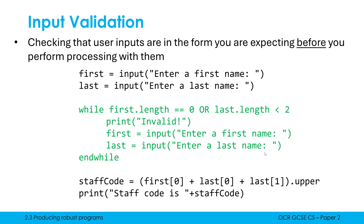I realised that the length of my first name needs to be at least one character long, and the length of my surname has to be at least two characters long for this indexing to work. So I'm checking to see if the length of my first name is zero or the length of my last name is less than two — that is a sign that the input was invalid. I'm telling the user the input is invalid.